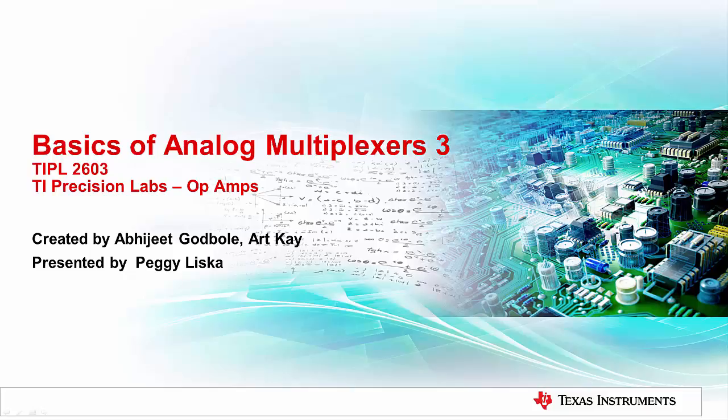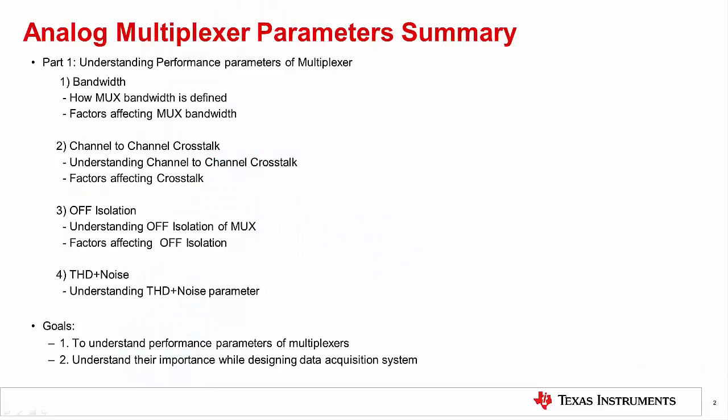In this video, we will provide an overview of the four other important parameters of multiplexers, which are bandwidth, channel-to-channel crosstalk, off-isolation, and THD plus noise. The goal of this series is to understand these parameters of multiplexers and which factors affect them. This video series explains how the parameters listed in an analog multiplexer's data sheet can be used to understand system performance.